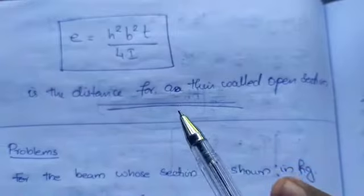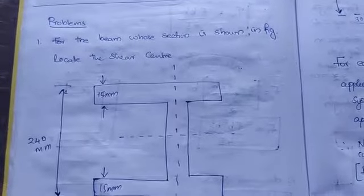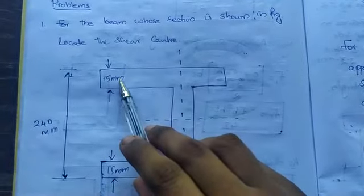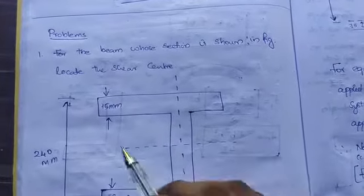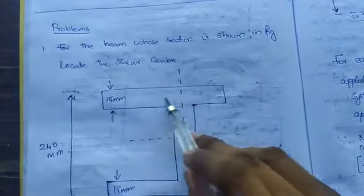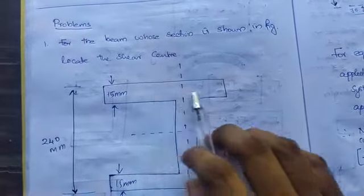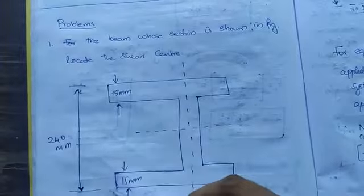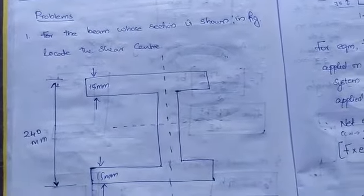The section given is an I-section whose width of the flange is given as 15mm. Length of the web has been given 200mm, total 250mm. For flange and web, height is 240 minus 30 equals 210mm. So you need to find out the shear center.